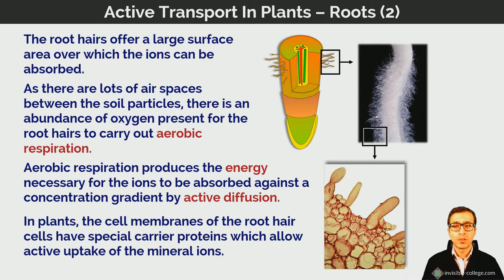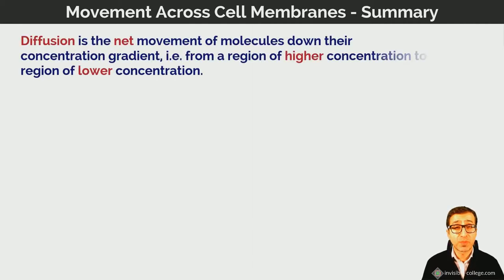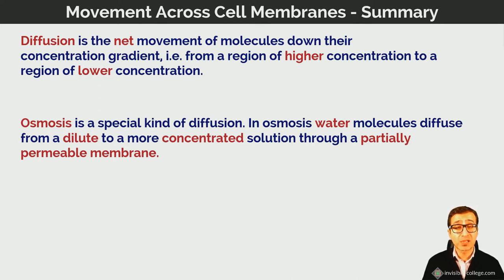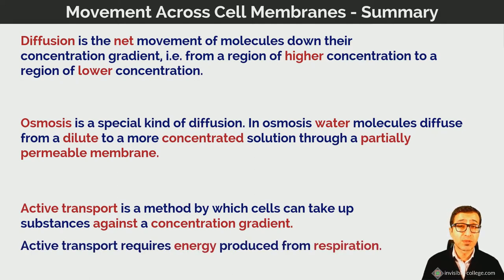To summarise the movement of substances across membranes: diffusion is the net movement of particles down their concentration gradient — from high to low concentration. Osmosis is a special case of diffusion involving the net movement of water molecules from where water is in high concentration to where it is in low concentration, through a partially permeable membrane. Active transport moves particles from low concentration to high concentration — against the concentration gradient — across a membrane, requiring energy produced by cellular respiration.